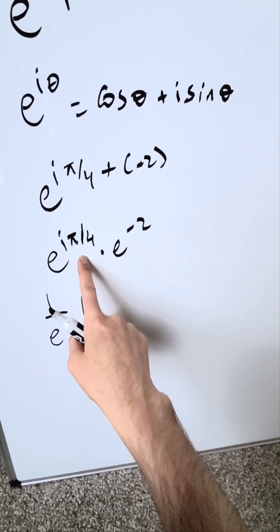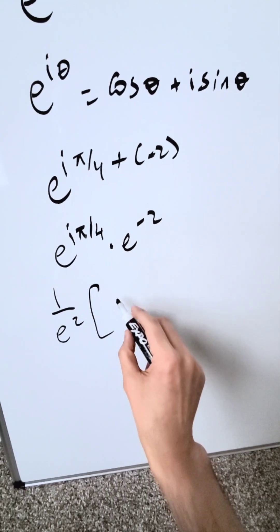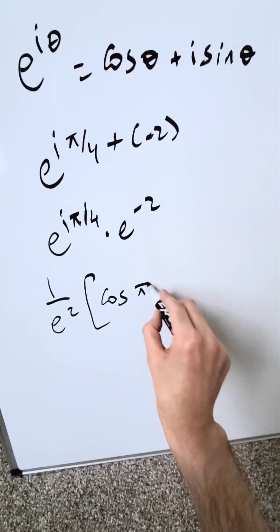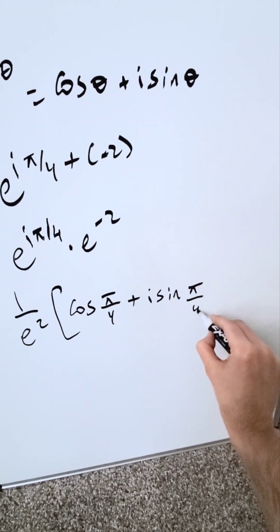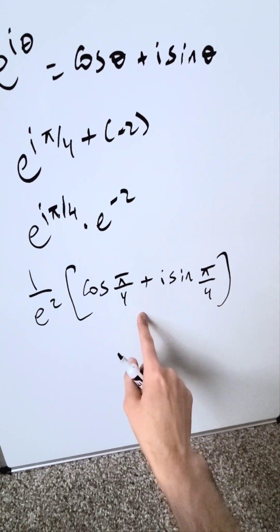Cosine of pi over 4 and sine of pi over 4, you know that from your trigonometric ratios. I'll have cosine pi over 4 plus i sine pi over 4. You just bring in your ratios now.